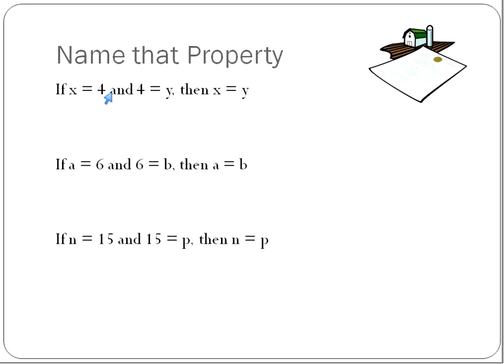One more: if x equals 4 and 4 is equal to y, then x is equal to y. If A equals 6 and 6 equals B, then A is equal to B — they're both equal to 6. If n is equal to 15 and 15 is equal to P, then n is equal to P. We're eliminating the middleman, and that is the transitive property — that's the property of equality called the transitive property.